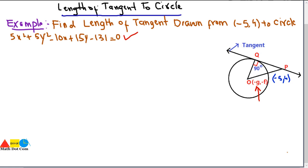The point P is (-5, 4), from which the tangent is to be drawn on the circle, and it cuts the circle at point Q. We have joined O to Q and O to P, making a triangle — a right angle triangle with an angle of 90 degrees.